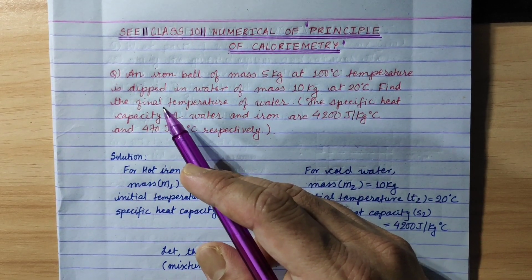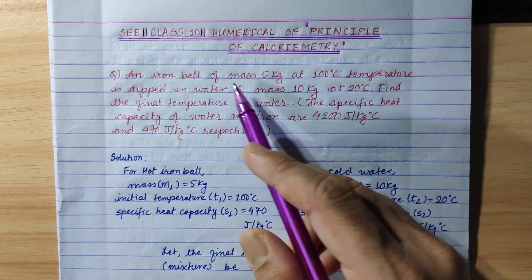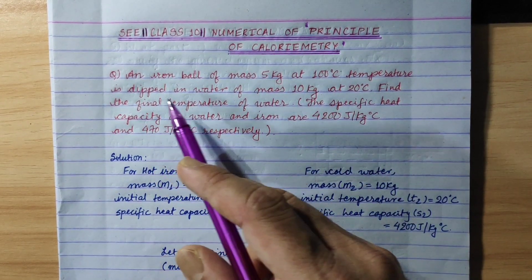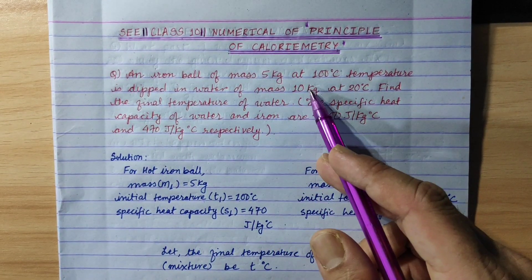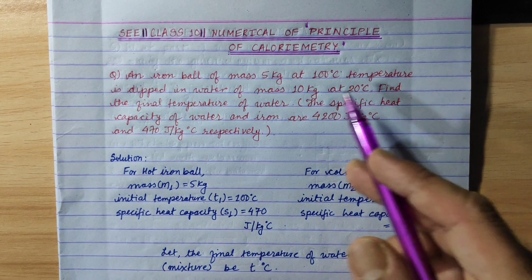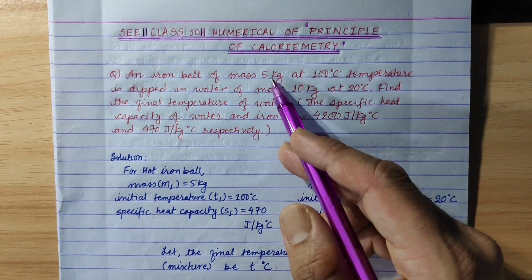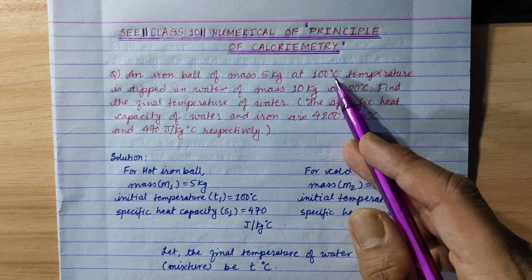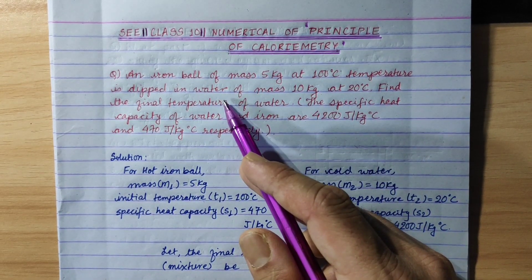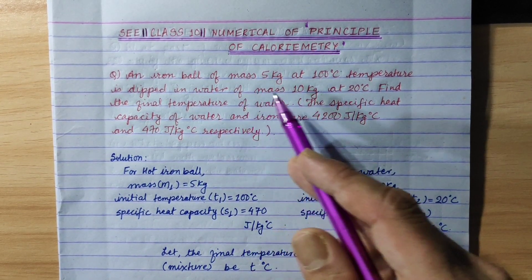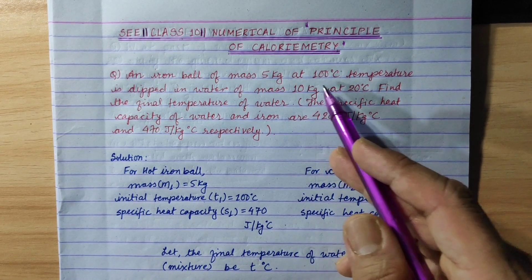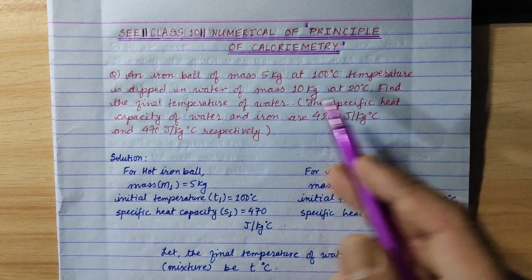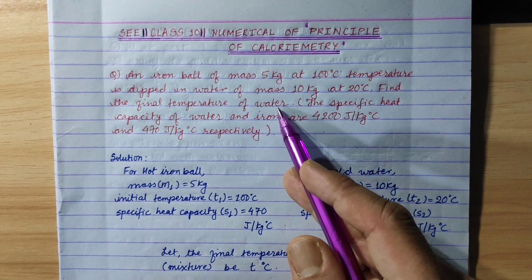Question: An iron ball of mass 5 kg at 100 degree Celsius temperature is dipped in water of mass 10 kg at 20 degree Celsius. The mass is 10 kg and the initial temperature is 20 degree Celsius. Find the final temperature of water.